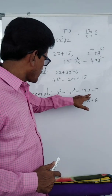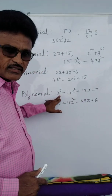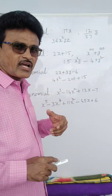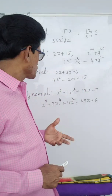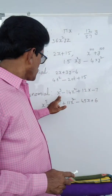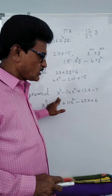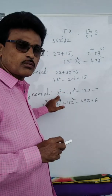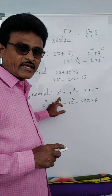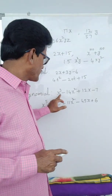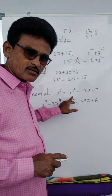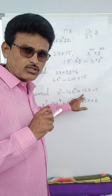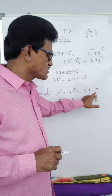See this polynomial — 1, 2, 3, 4 terms are there, highest degree is 3, so it is a cubic polynomial. Now coefficients: here the variable is x. First term is x³ — what is the multiple of x³? It is 1, so the coefficient of x³ is 1. Coefficient of x² is minus 14. Coefficient of x³ is 12 — include the sign. Constant term is minus 7.